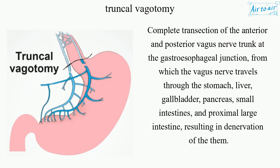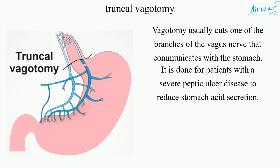This results in denervation of them. Truncal Vagotomy usually cuts one of the branches of the vagus nerve that communicates with the stomach. It is done for patients with severe peptic ulcer disease to reduce stomach acid secretion.